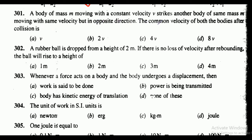Question 301: a body of mass m moving with constant velocity v strikes another body of the same mass m moving with the same velocity but in the opposite direction. The common velocity of both bodies after collision — the correct answer is option B, that is zero.